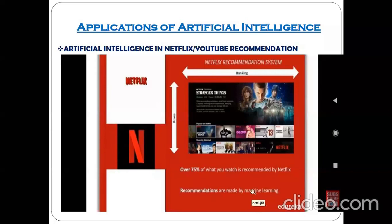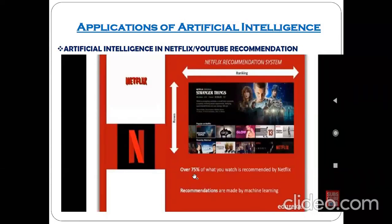How does this recommendation work? For example, on YouTube, if a person last viewed certain kinds of videos, then whenever they go to the portal next time, it automatically takes them to videos related to their previous watch history. I showed you a live example of YouTube recommendations.